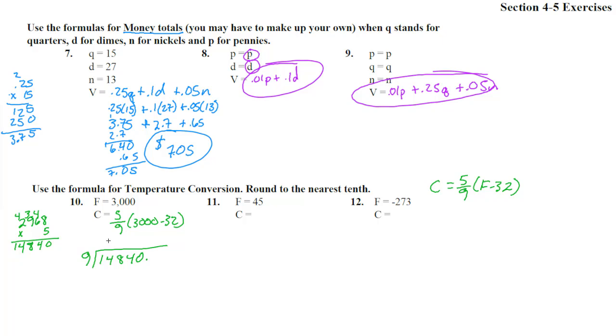9 going into 14,840. 9 goes into 14 once. 1 times 9 is 9. Subtract, that's a 5. Drop down the 8. 9 goes into 58 six times. 6 times 9 is 54. Subtract and you get a 4. Drop down that 4. 9 goes into 44 four times. 4 times 9 is 36.